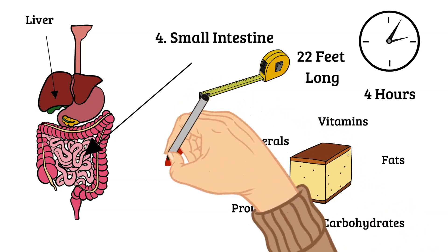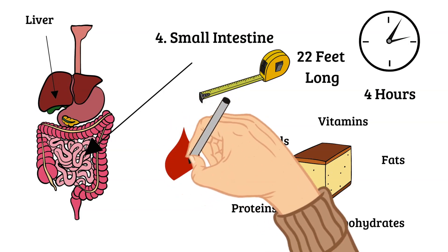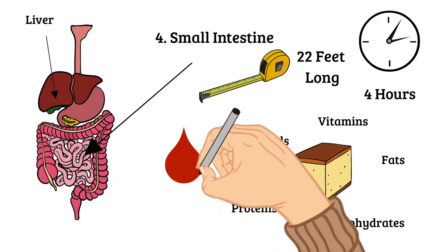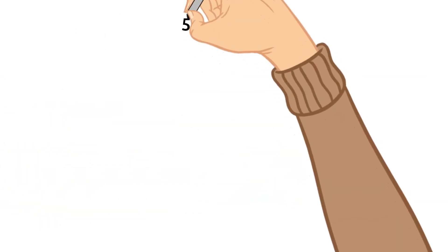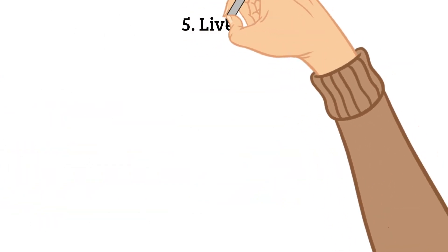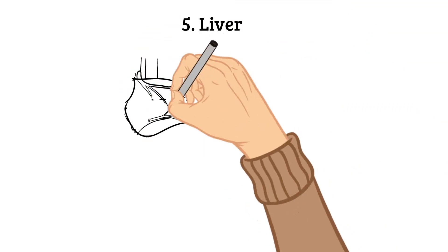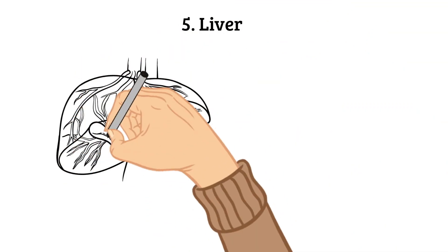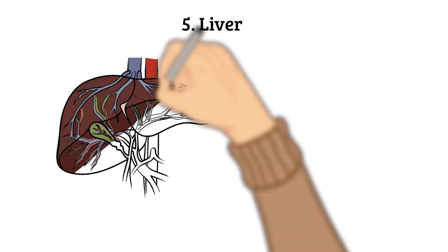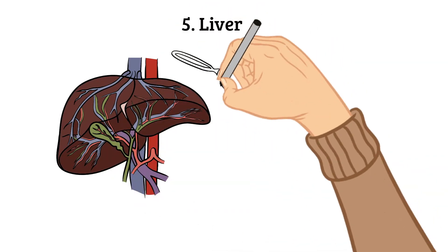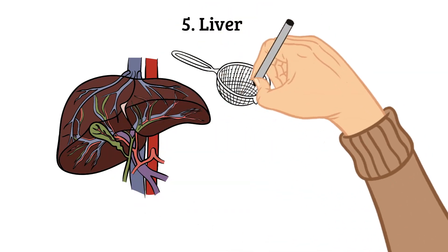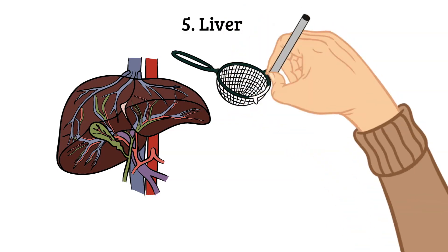And that brings us to the liver. So remember I said the liver produces something called bile, which helps to absorb fats into the bloodstream. The nutrient-rich blood comes directly to the liver for processing.